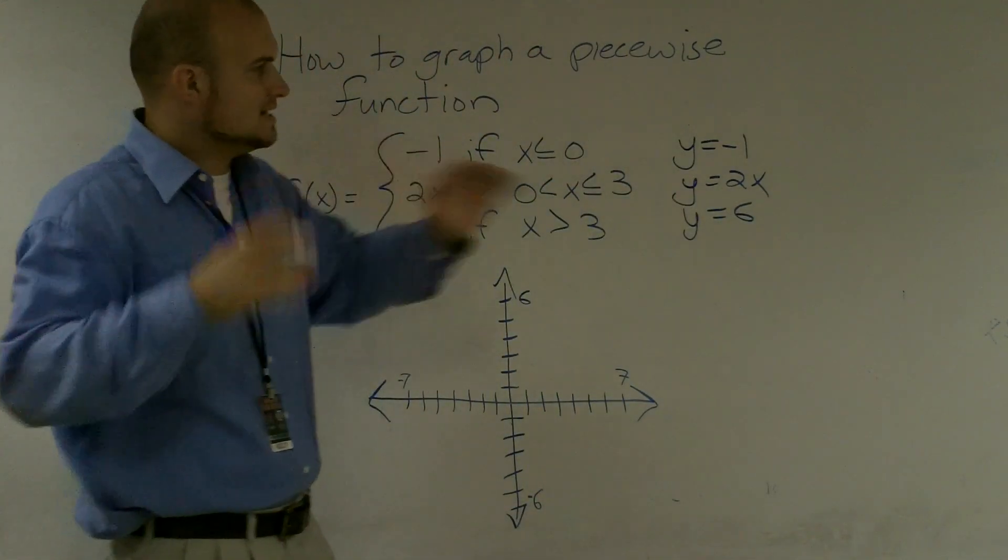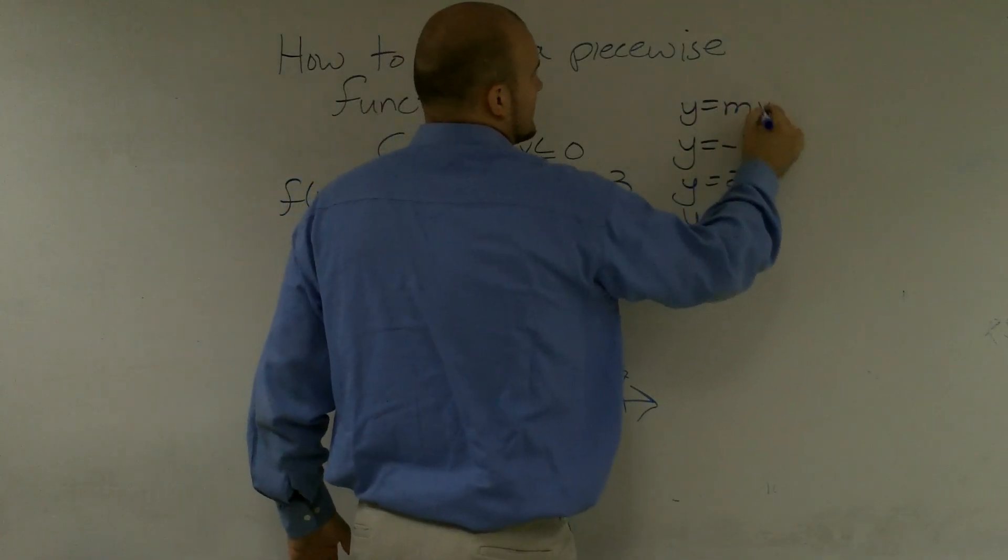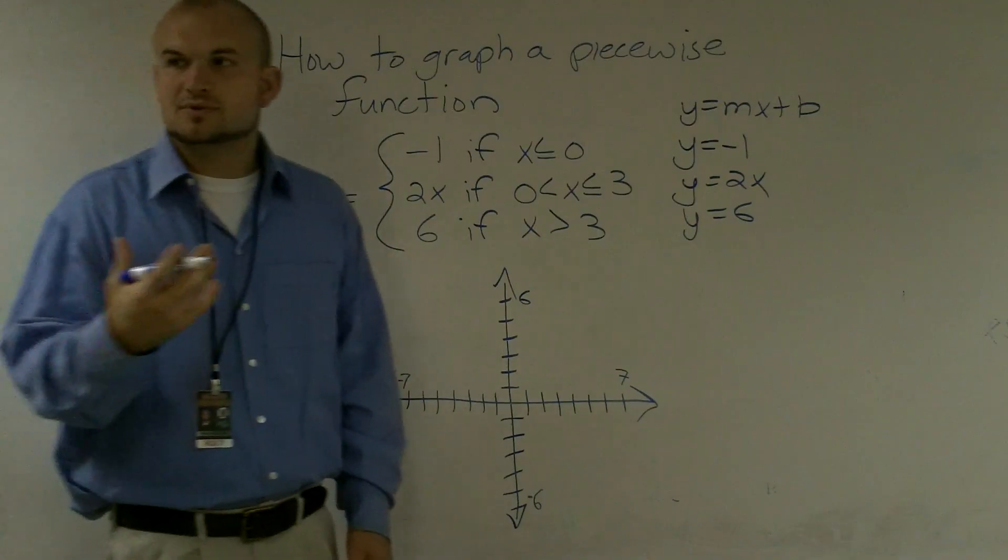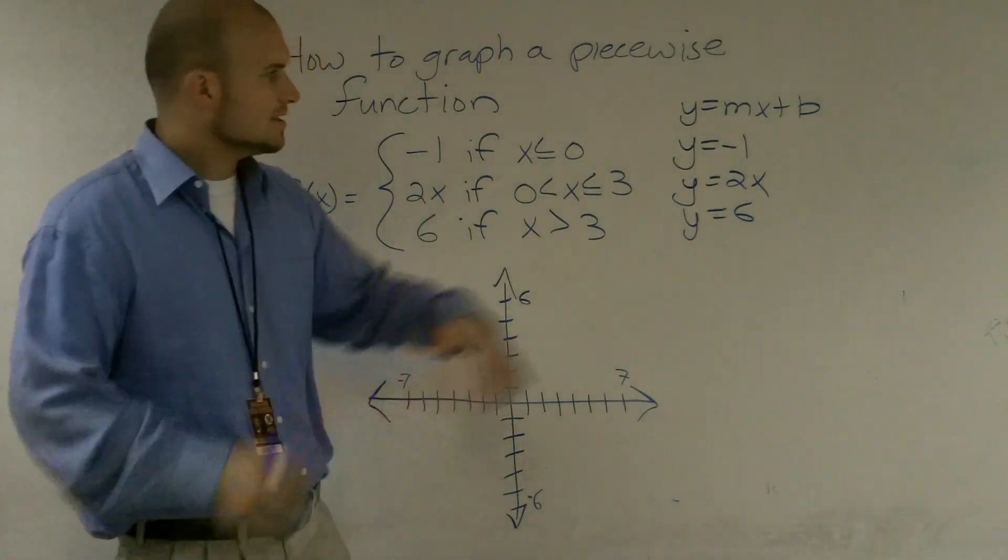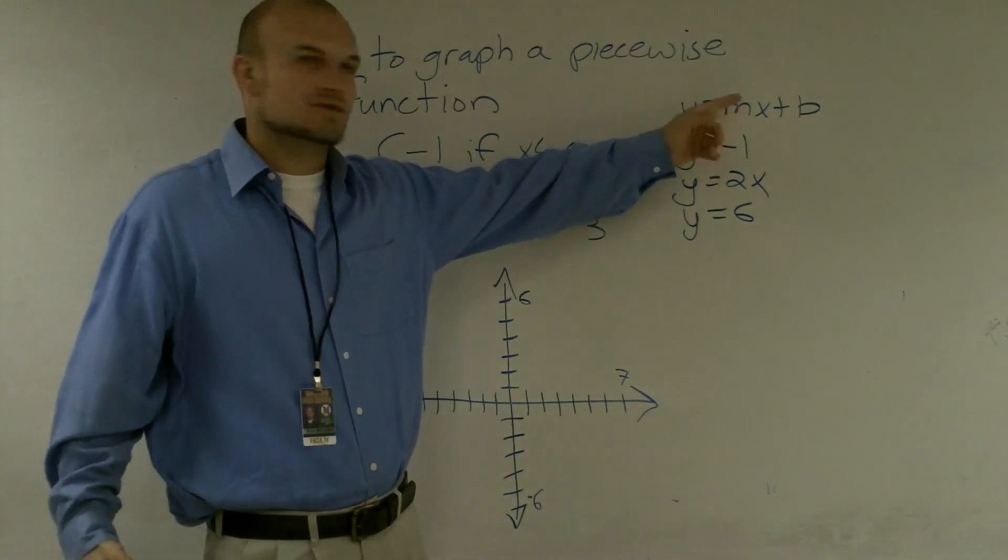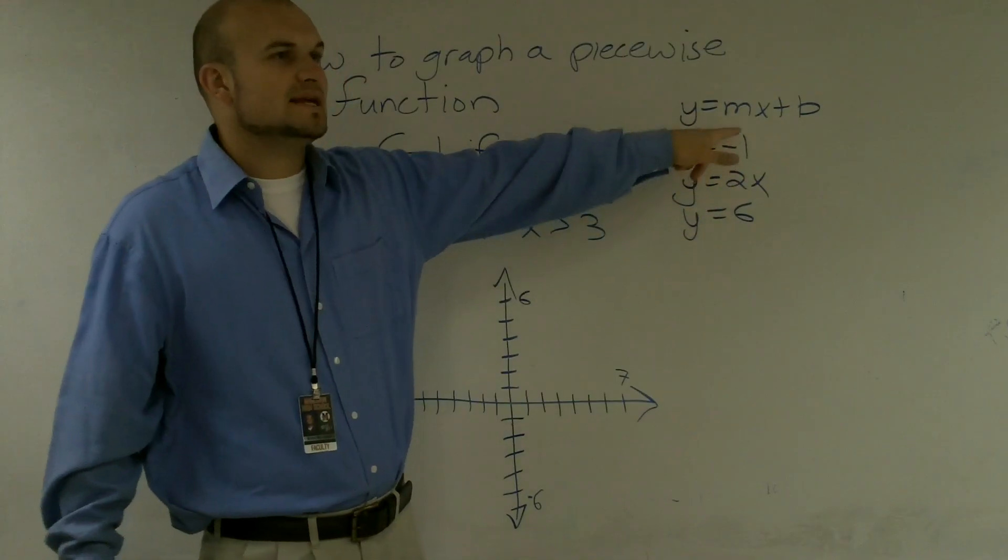So now I'm starting to think of these. If I remember my y equals mx plus b form, I need to say, what is going to be the y-intercept for each one of these equations, and then what is going to be the slope? If I look at this first one, I notice that there is no x, so therefore I have no slope. And my y-intercept is going to be negative 1.